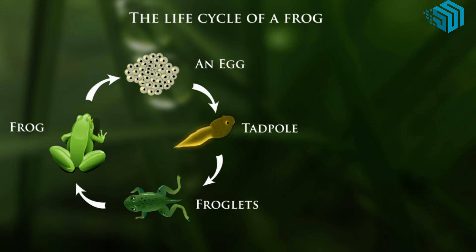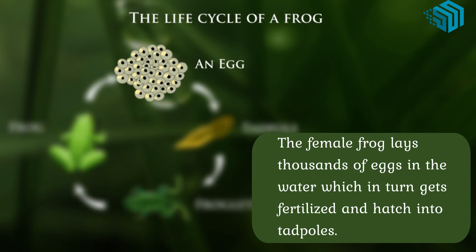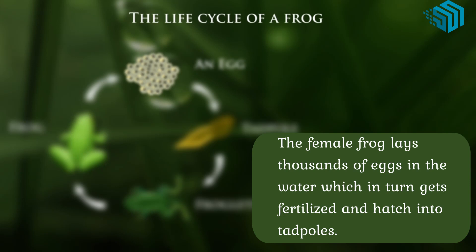What happens in the first stage? The female frog lays thousands of eggs in the water, which in turn get fertilized and hatched into tadpoles.